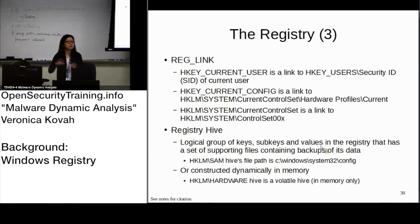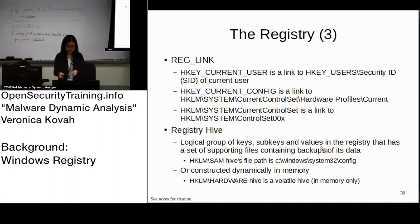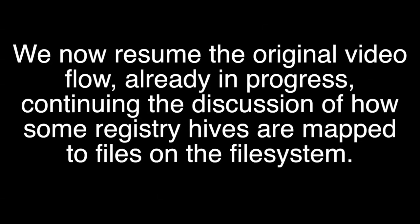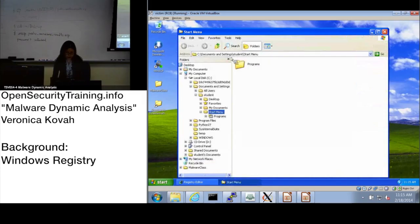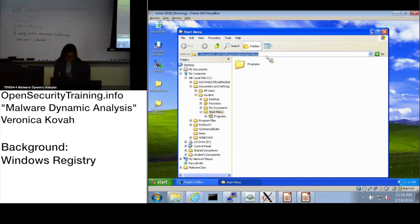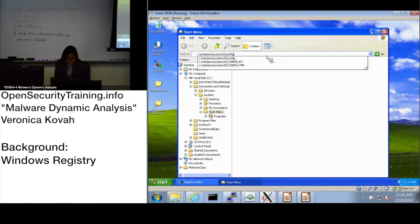HKLM\HARDWARE is a volatile hive — it's not backed by files on disk. To see the hive backing files, open Explorer, navigate to C:\Windows\System32\config. You'll find files there, like SAM, that correspond to the non-volatile registry hives stored on disk.